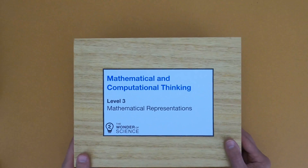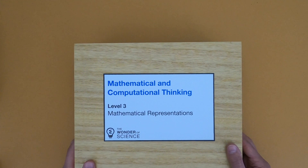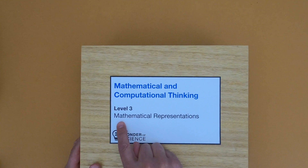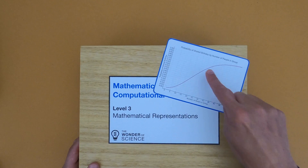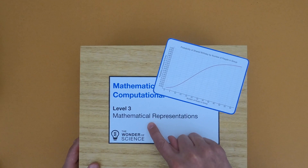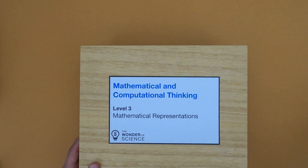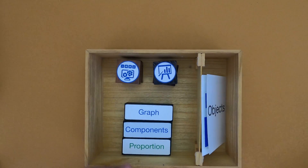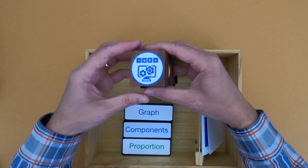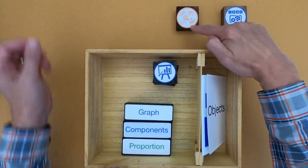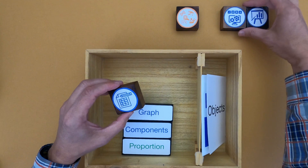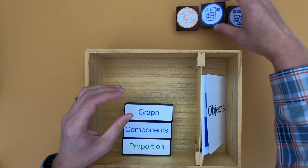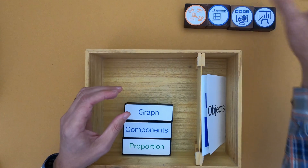Hi, it's Mr. Andersen and this is Mathematical and Computational Thinking Level 3: Mathematical Representations. Math underlies everything in science, and as we start to gather data we start to represent underlying equations and formulas — we call those graphs. I think of a mathematical representation in science as a graph, and we're going to be looking at a lot of graphs, searching for the underlying math connected to a phenomena.